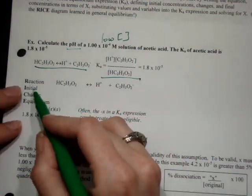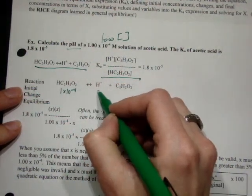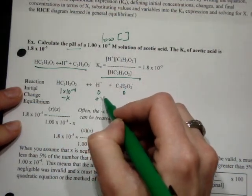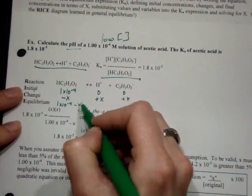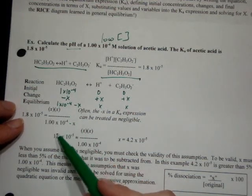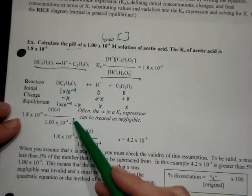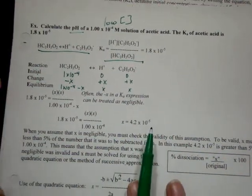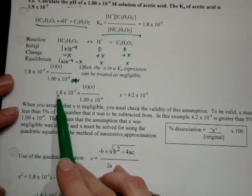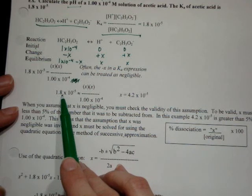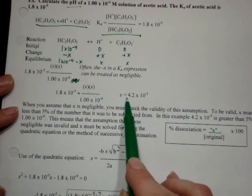Once you have your reaction set up, your initial concentration was 1×10⁻⁴ molar, 0 and 0. Do your minus and plus X. So that's 1×10⁻⁴ minus X, X and X. From here, plug everything in. Let's pretend we're going to treat X as negligible. We multiply 1.8×10⁻⁵ times this value, then take the square root for our value of X.